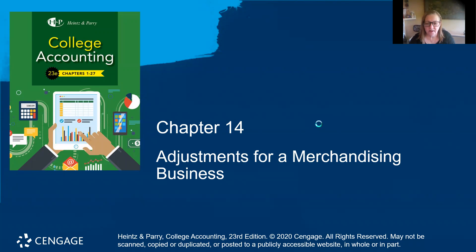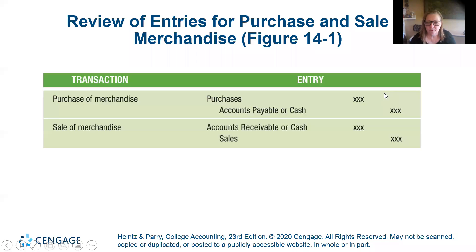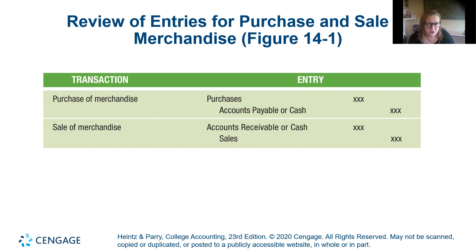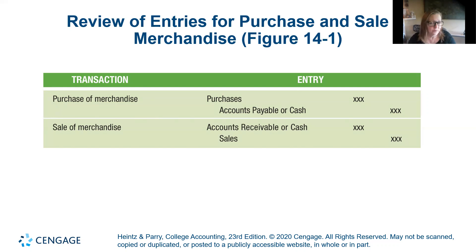When we add merchandise, for a purchase of merchandise we debit the merchandise inventory if we're on the perpetual system, and we debit the purchases account if we're on the periodic system. In both cases, we credit either accounts payable or cash. And then when we make the sale, we debit accounts receivable and cash, and we credit sales just like always — no matter what the method is, we credit the revenue account and debit either accounts receivable or cash.